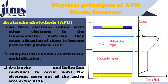Because of the multiplication, the photocurrent is amplified. In the avalanche photodiode, as these electrons collide with other electrons in the semiconductor material, they cause a fraction of them to become part of the photocurrent. This process is known as avalanche multiplication, and it continues to occur until the electrons move out of the active area of the APD — the multiplication continues until the electrons are settled.